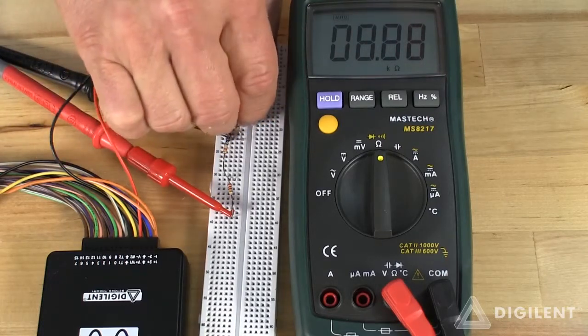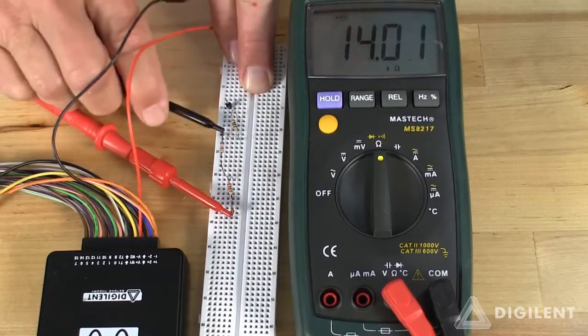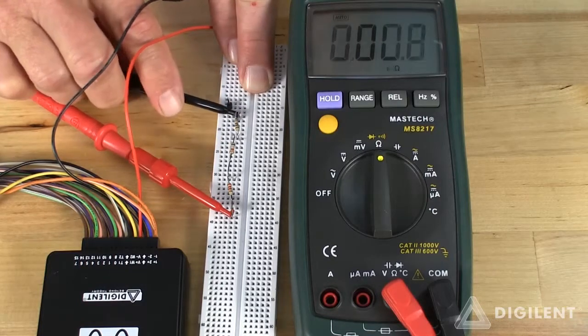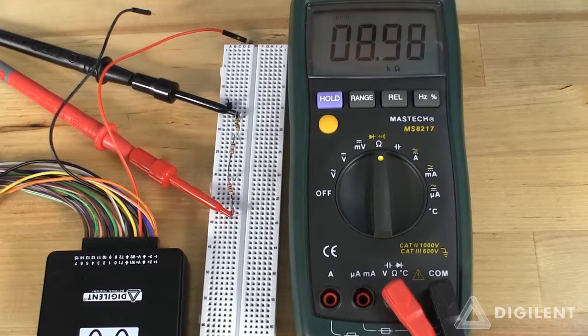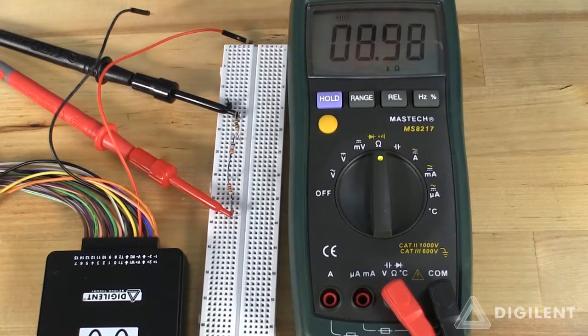This is a 100 kiloohm resistor. Addition of this third resistor in series brings the total combination up to 8.98 kiloohms, close enough to 9 kiloohms to make no difference.